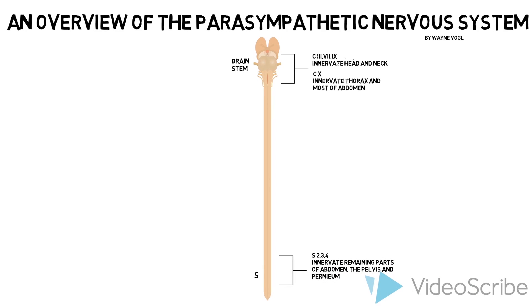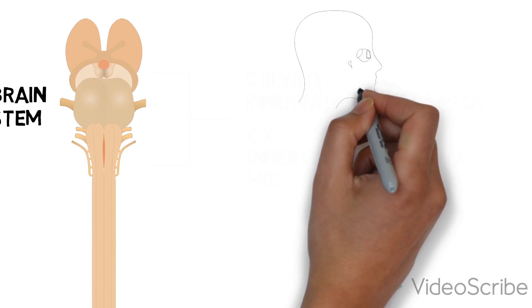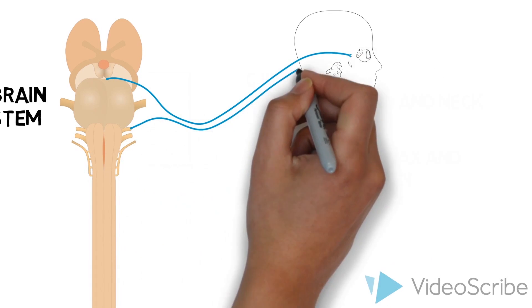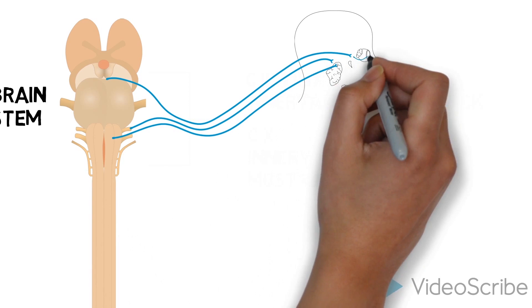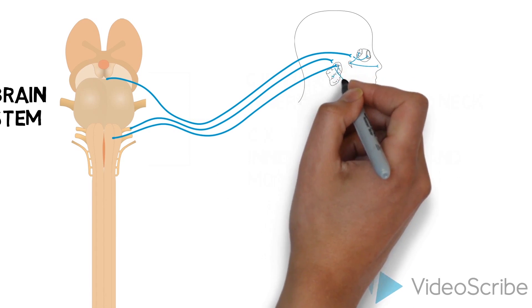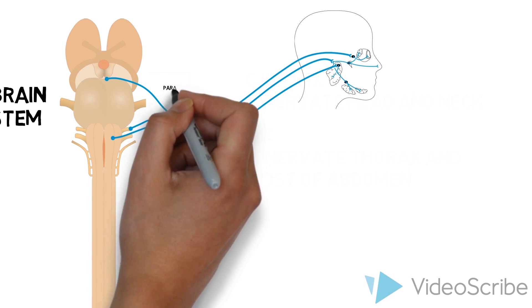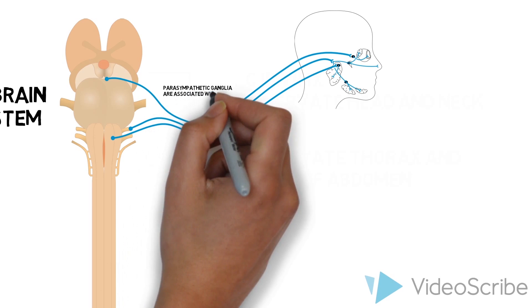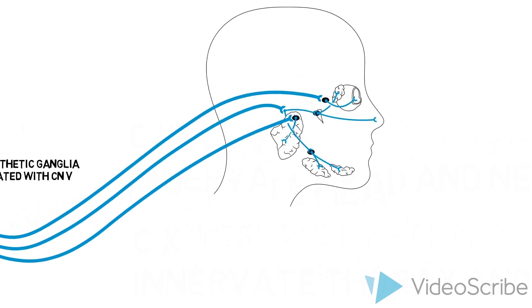Let's consider those visceral motor fibers carried in 3, 7, and 9. Parasympathetic preganglionic visceral motor fibers carried in 3, 7, and 9 leave these nerves and synapse in ganglia associated with cranial nerve 5. Postganglionic fibers hop onto branches of cranial nerve 5 to get to their target tissues.